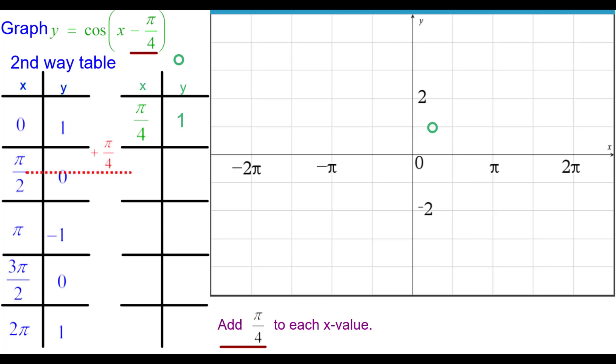Adding pi over 4 to pi over 2, that would be 3 pi over 4. And if you're not sure how that's done, you can pause to see my arithmetic here. The y coordinate stays the same as 0, so (3 fourths pi, 0).